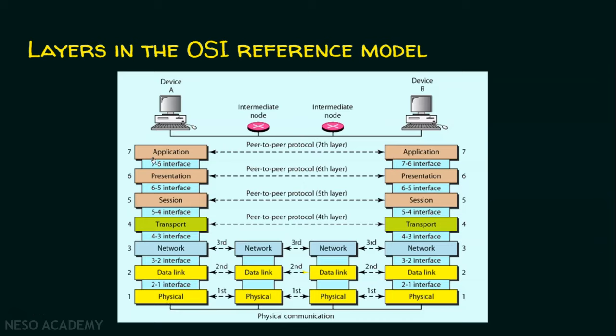Each layer has its own set of functionalities. In today's session, we are not going to deal with the functionalities of each layer in detail. The main focus is to remember the OSI reference model and its layers. These intermediary nodes process data pertaining to only three layers: physical layer, data link layer, and network layer.